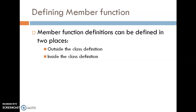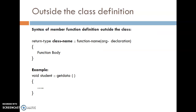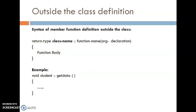Defining Member Functions. Member functions are whatever functions we define inside the class — they are called member functions of that class. We can define those functions at two places: first, outside the class, and second, inside the class definition. The syntax to define a member function outside the class is: return type, class name, scope resolution operator, function name, argument declaration in brackets, and the function body inside the opening and closing brackets.